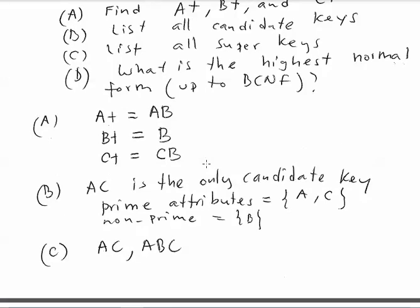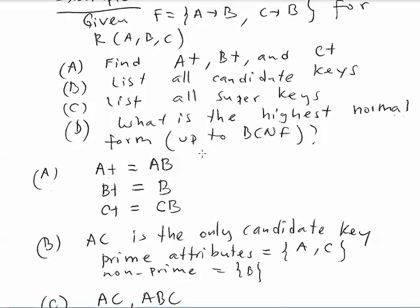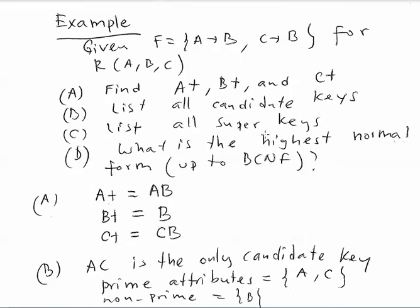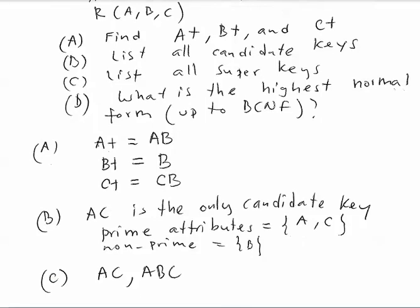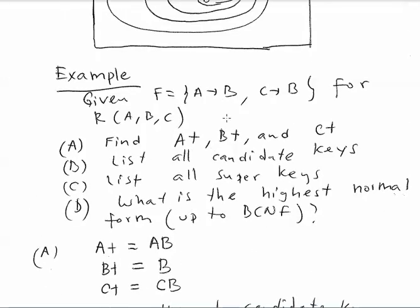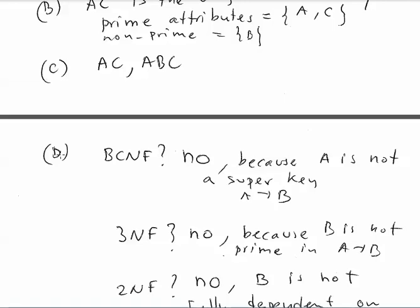Now we can answer: is this table in BCNF? We check the left-hand side of every functional dependency — if A is a super key and C is a super key, then yes, the table is BCNF. But we know that A by itself is not a key and C by itself is not a key — the super keys must contain both A and C. So the table is not in BCNF. That gives us answer D.